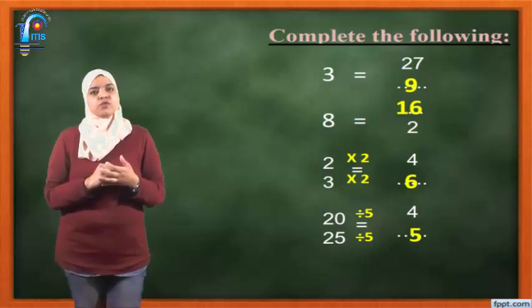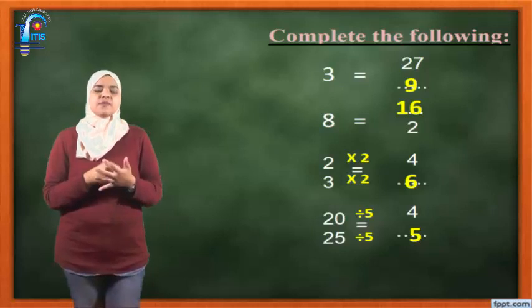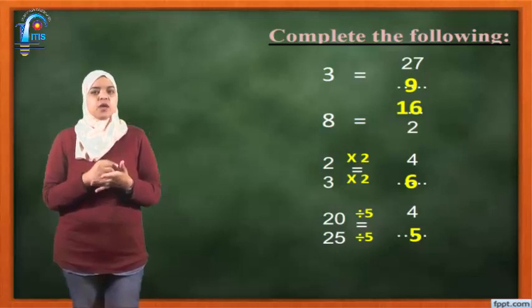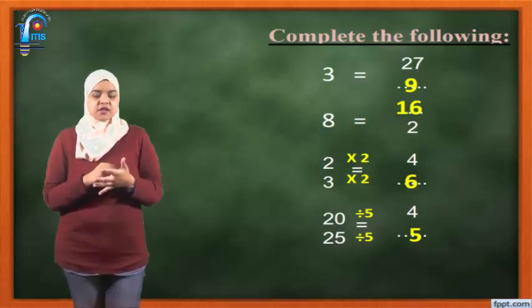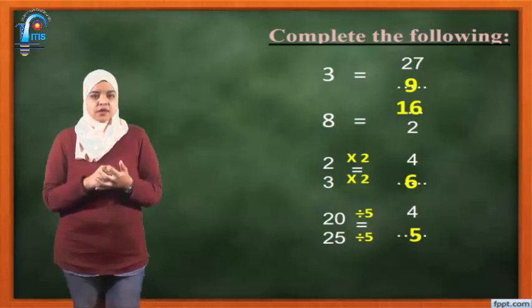The second one: 8 equals blank over 2. Here, the missing number is the denominator number. So 8 times 2 equals 16. How to check my answer? 16 divided by 2 equals 8.